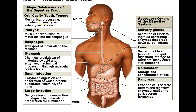Starting with the oral cavity, which includes your teeth and mouth, this is where mechanical processing occurs. In digestion, there are two types: mechanical digestion, which is the physical breaking and mixing of food, and chemical digestion, which is chemically breaking down food for its specific nutrients. The mouth has a lot of mechanical digestion — our teeth and tongue are ripping, mixing, and breaking apart food physically.